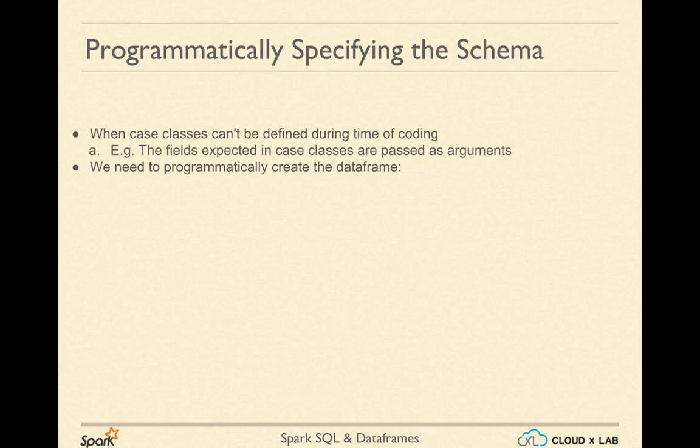While using the previous reflections-based method of converting an RDD into a DataFrame, we created a case class with various fields. But what if we don't know the number of fields along with their data types during the time of coding, or we want to make a generic program that can convert various kinds of RDDs into a DataFrame? We would need to programmatically specify the schema.